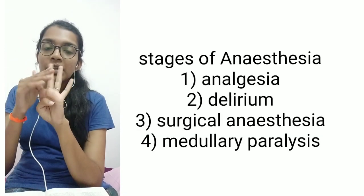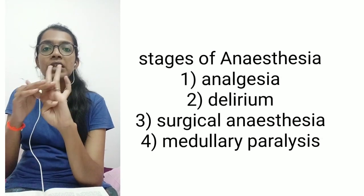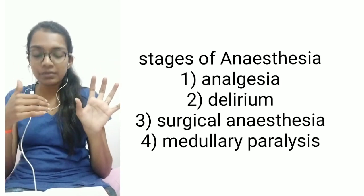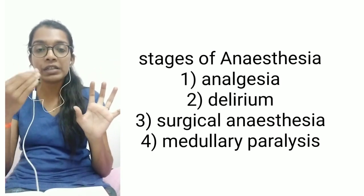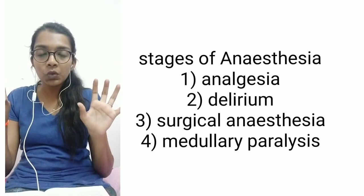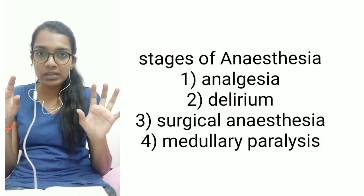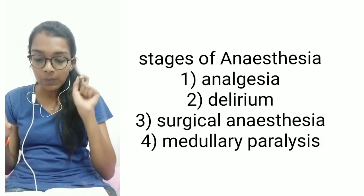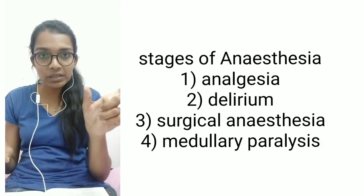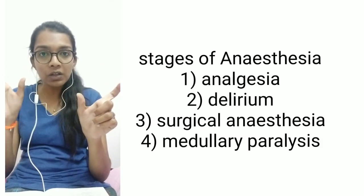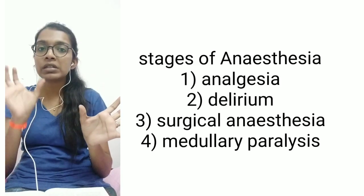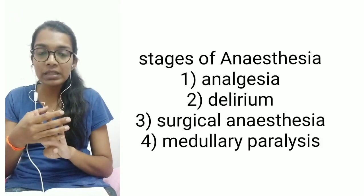Coming to the stages of anaesthesia, there are four stages. Stage 1 is analgesia, from the beginning of inhaling the anaesthetic to the loss of consciousness. Stage 2 is delirium, from loss of consciousness to the beginning of normal respiration. Stage 3 is surgical anaesthesia, from normal respiration to cessation of respiration, and is divided into four planes.